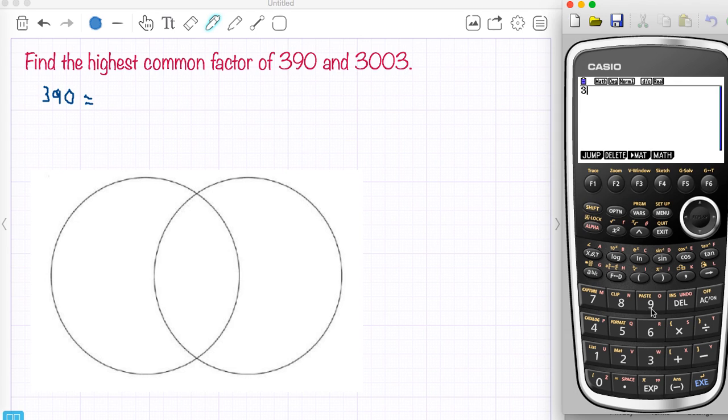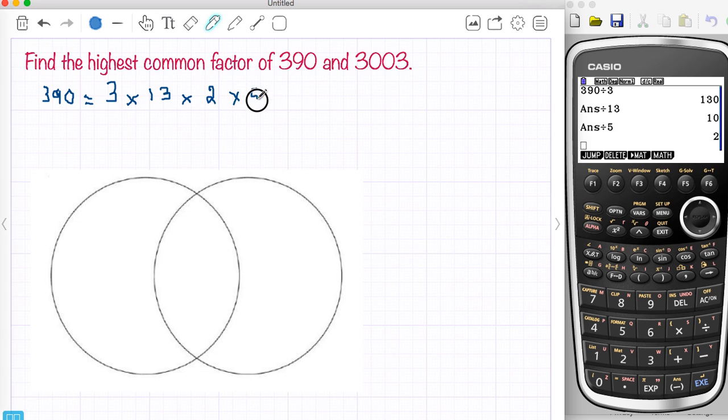Now I know that 390 can be divided by 3, 3 is a prime number, so I divide that by 3 and I can see now that I can also divide that by 13 and that will leave me with 10 and 10 can be divided by 5 and it leaves 2 which is also a prime number. So all those are prime numbers, 3, 13, 2 and 5, all prime numbers.